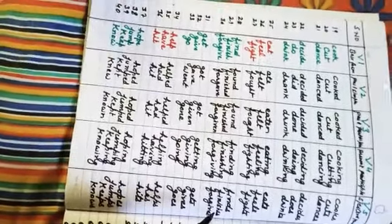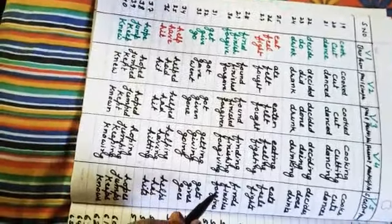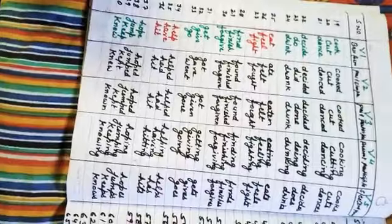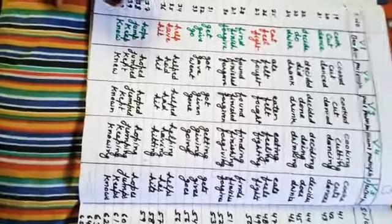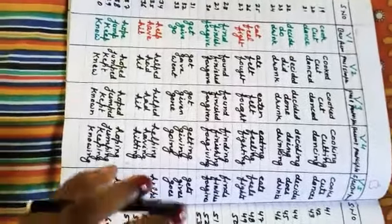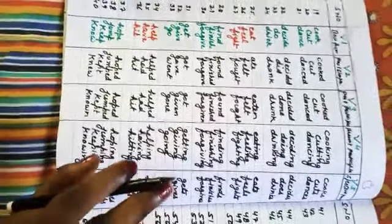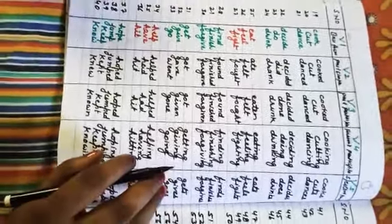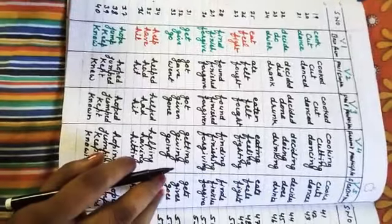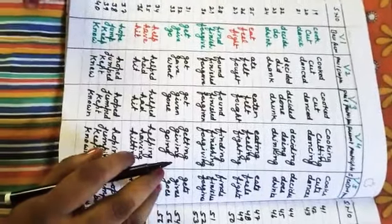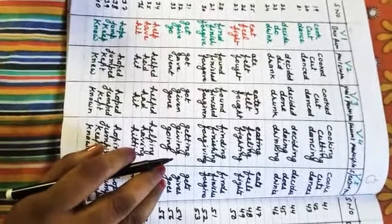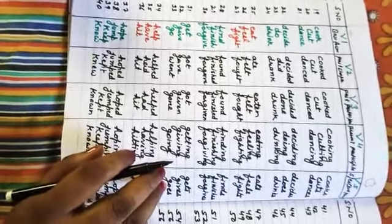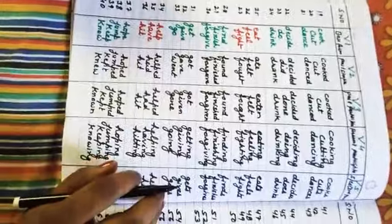The rest of the verbs I will tell you in the next class. Now you have homework: note all the base forms with their Hindi meanings that I have mentioned today in your copy, and remember them. Thank you.